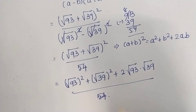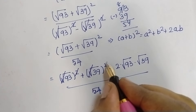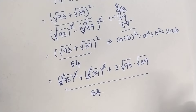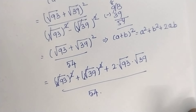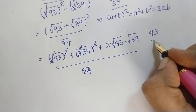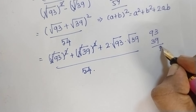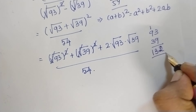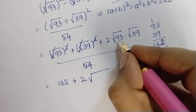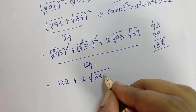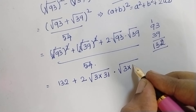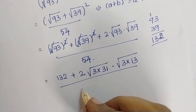Divided by 54. Here the root and square cancel, and root and square cancel again. So what we have remaining: we need to add 93 and 39, which gives 132. Therefore this equals 132 plus 2 root of 93 times 39 divided by 54. Now 93 can be written as 3 into 31, and 39 can be written as 3 into 13.